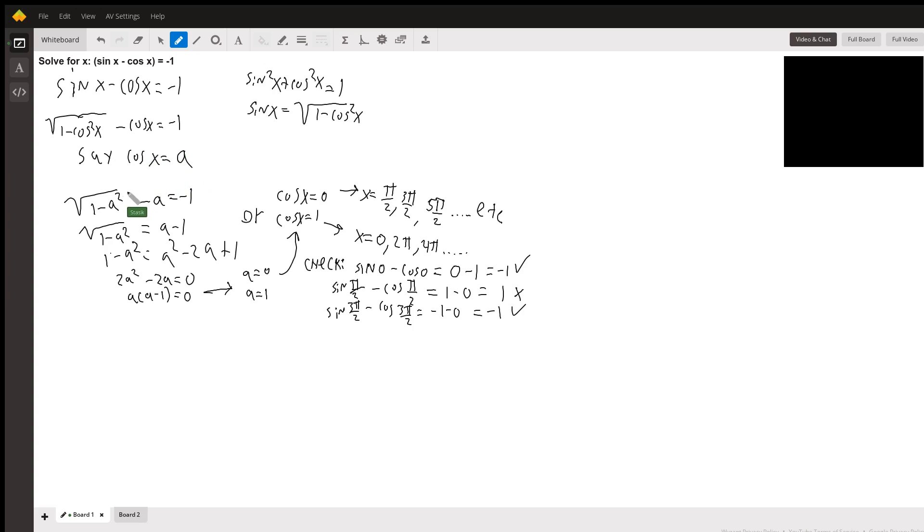We're just going to say that cosine x equals a, so we have square root of one minus a squared minus a equals minus one.